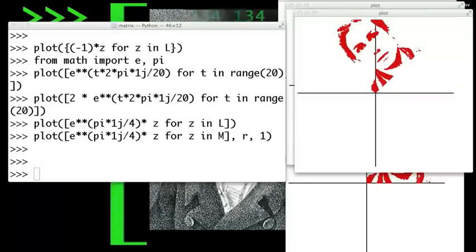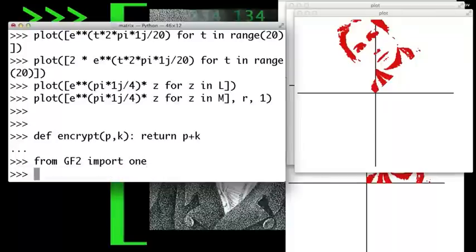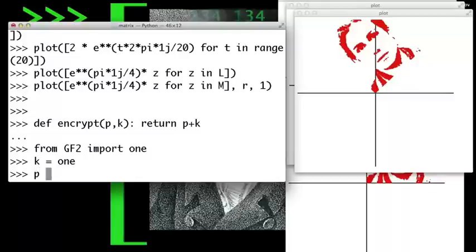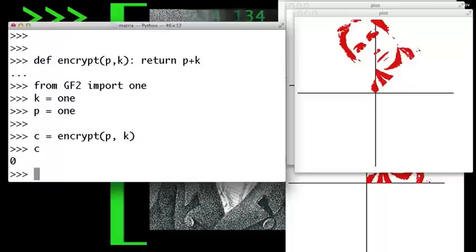By studying that encryption table, you might notice that it's really just the addition table for GF2. We can therefore implement encryption like this. Here's how we would use it. Import the 1 from GF2. Let's say the key is 1 and the plain text is 1. We compute the ciphertext using encryption. And that's what we get.